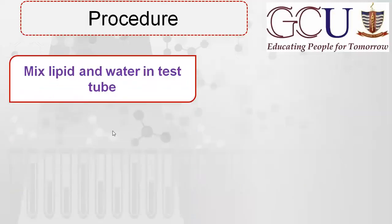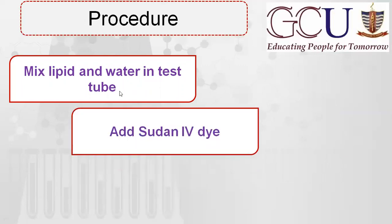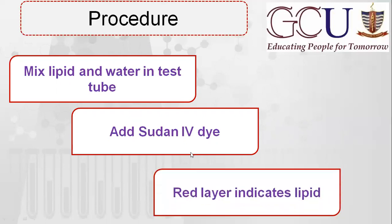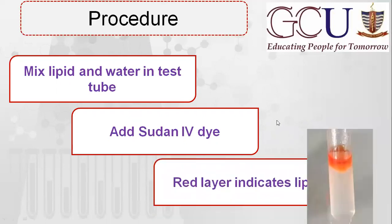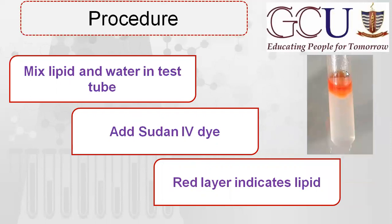To perform the test, mix lipid and water together. This forms a separate layer of lipid on top of the water. Then add Sudan 4 dye. The upper lipid layer turns red, forming a distinct reddish-brown colored layer. If this colored layer appears on top, it indicates the substance is a lipid. The lower layer is water, and the upper stained layer is the lipid.